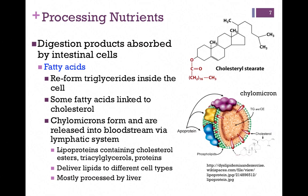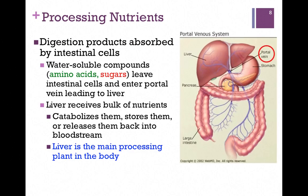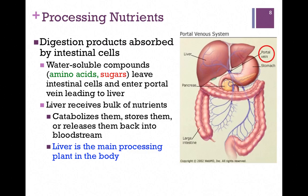These chylomicrons deliver lipids to different cell types, but primarily it's sent to the liver for processing. Water-soluble compounds, such as amino acids and sugars, leave the intestinal cells and enter the portal vein, illustrated at the top of the screen. In the red circle, there's our portal vein — we absorb them through the intestine, they enter the portal vein, and that leads to the liver. The liver receives the bulk of the nutrients in our bodies. It catabolizes them, stores some, or releases some into the bloodstream, supplying itself and the rest of the body. It is the main processing plant in the body.